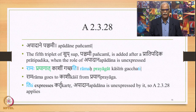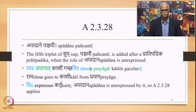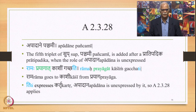We have 'Apadane panchami,' Sutra 2.3.28. The fifth triplet of Sup, namely Panchami, is added after a Pratipatika when the role of Apadana is unexpressed — Anabhihite. Example: 'Ramah prayagat kashim gachati' — Rama goes to Kashi from Prayag. Ti expresses Karthu; Apadana is unexpressed by it. So 2.3.28 applies and we add the fifth case to make it Prayagat. Ti expresses Kartha and Rama is the Kartha, therefore Rama takes the Prathama Vibhakti.